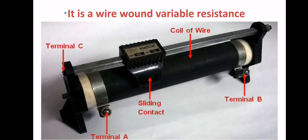When C is the moving terminal and we move the sliding contact from A towards B, the resistance of the wire increases. And if we move it from B towards A, the resistance of the wire decreases.